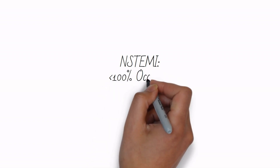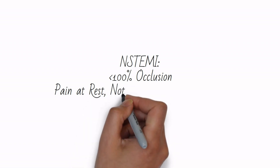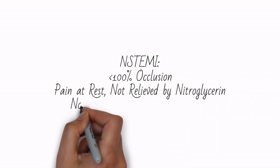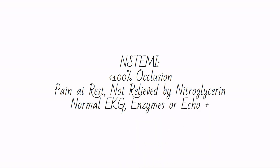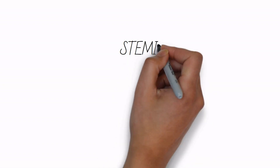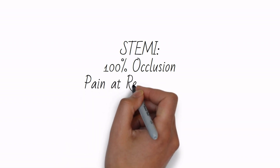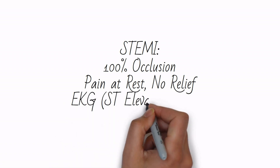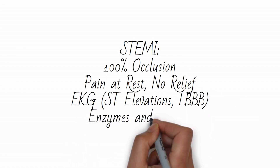The next acute coronary syndrome is non-ST elevated myocardial infarction, or NSTEMI. This is also a plaque rupture resulting in less than 100% occlusion. There will be pain at rest with no relief. There will be no ST elevations on EKG, but troponins may elevate and echo may reveal wall motion abnormalities. STEMI, or ST elevated myocardial infarction, is an unstable plaque rupture resulting in 100% occlusion. There will be pain at rest with no relief. The EKG will show ST elevations and/or a new left bundle branch block. There will be elevated troponins once sufficient time passes, and the echo will likely show wall motion abnormalities of the infarcted tissue.